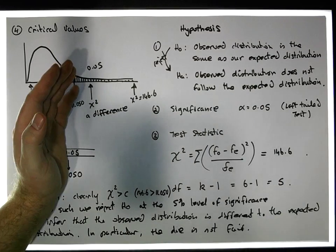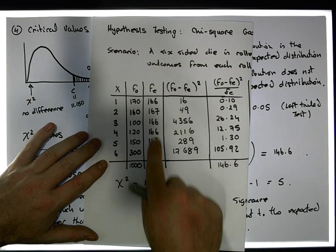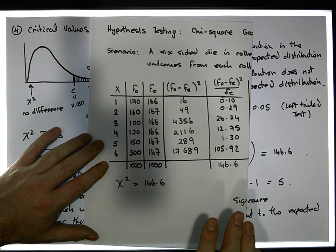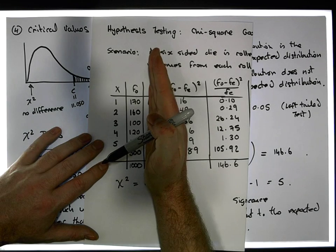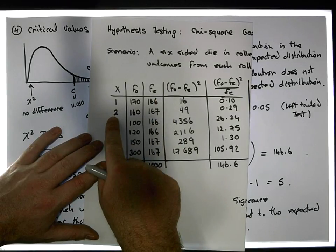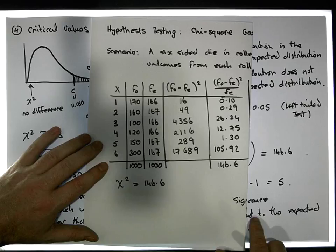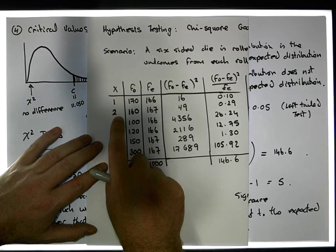If there was no difference between our observed and expected, we'd expect our test statistic to be zero. Now our expected frequencies have been set up assuming that each observation has the same probability of occurring. In other words, that there's no difference between the probability of seeing a 1, 2, 3, 4, 5, or 6.